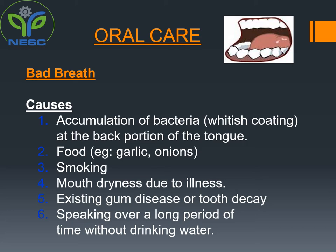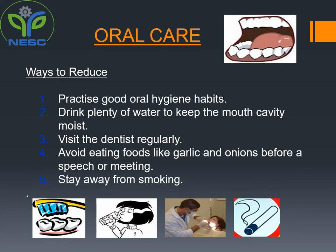Number six, speaking over a long period of time without drinking water. Let's discuss the ways to reduce our oral care diseases. Number one, practice good oral hygiene habits. Number two, drink plenty of water to keep the mouth cavity moist. Number three, visit the dentist regularly. Number four, avoid eating foods like garlic and onions before a speech or meeting. Number five, stay away from smoking.